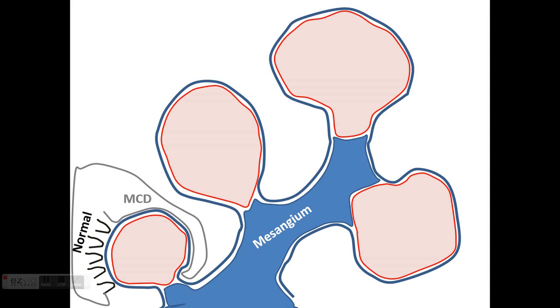If you imagine very severe injury to the podocytes where you can develop extensive effacement of foot processes but also cell death, this is really what happens in focal sclerosis. Some cells will die off and detach from the glomerular basement membrane.